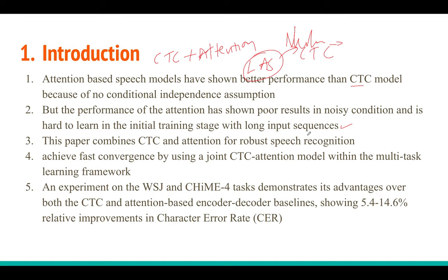This paper combines the CTC loss with the attention loss in the sequence-to-sequence model to build a robust speech recognition model. It takes the advantages from CTC and the advantages from the LAS model, and combines those two losses to get the best out of both. The advantage of using CTC along with attention is that CTC uses something called dynamic programming, also known as the forward-backward algorithm.